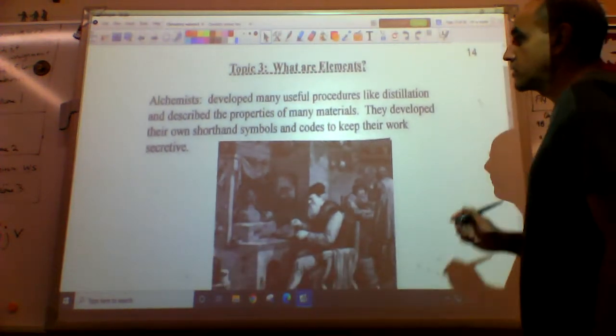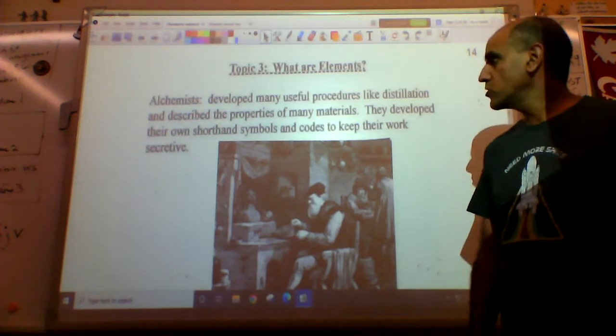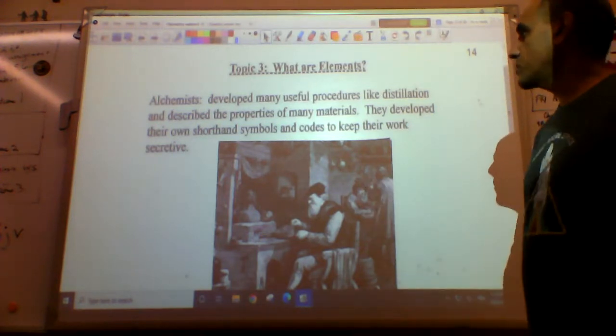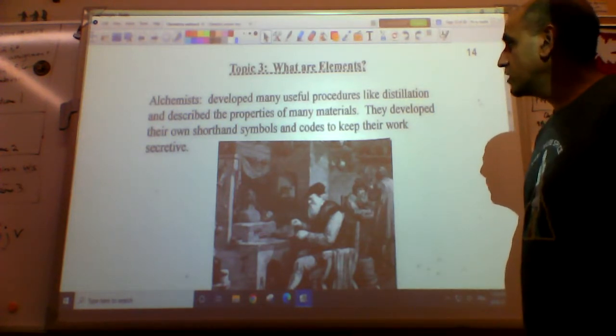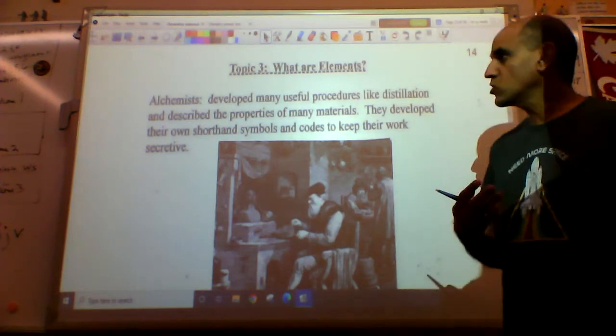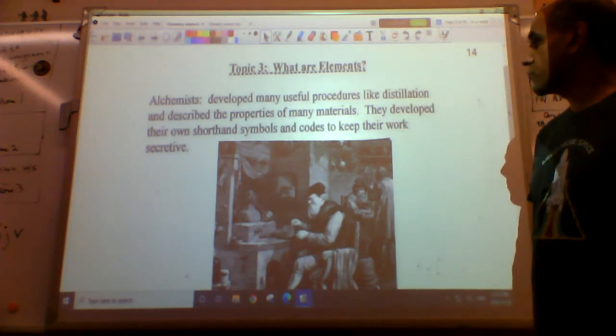So there's a group of people called the alchemists. They developed many useful procedures. These are the original chemistry people. They invented chemistry essentially. They made lots of useful procedures like distillation and described properties of lots of different materials.